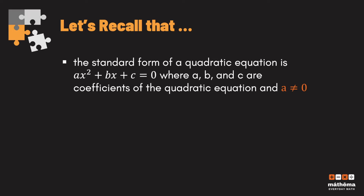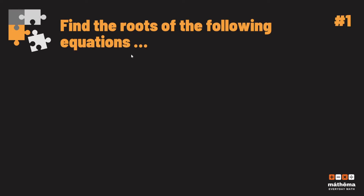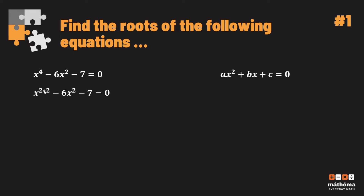For example one, find the roots of the equation x to the fourth power minus 6x² minus 7 is equal to zero. Notice that this equation is in the form of ax² + bx + c = 0, only that the highest degree is 4. We can rewrite this equation as (x²)² minus 6x² minus 7 is equal to zero.